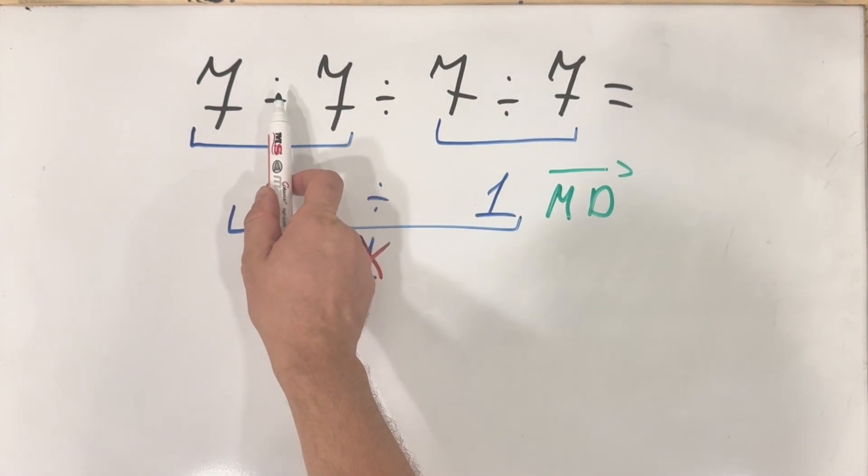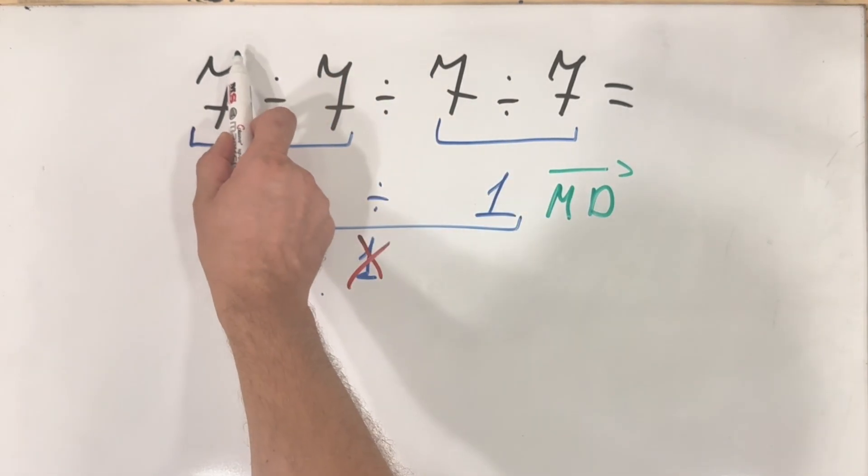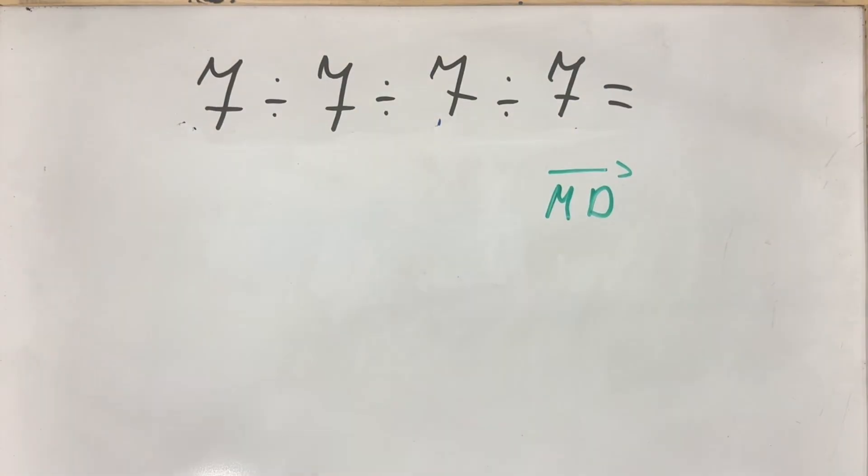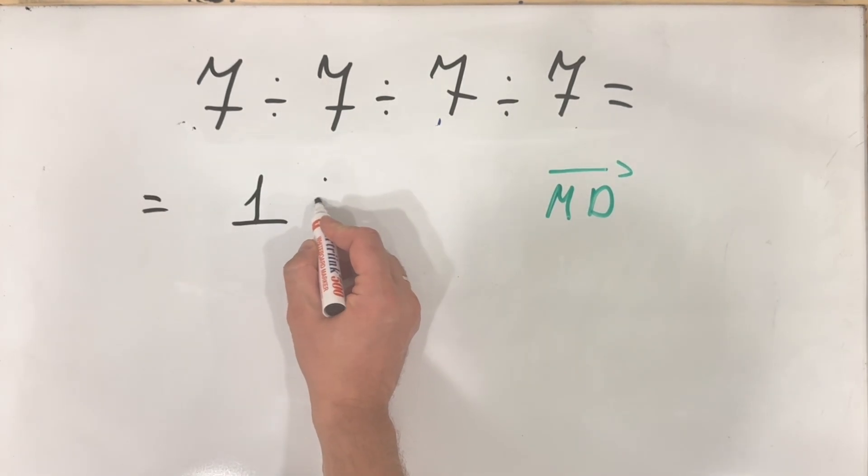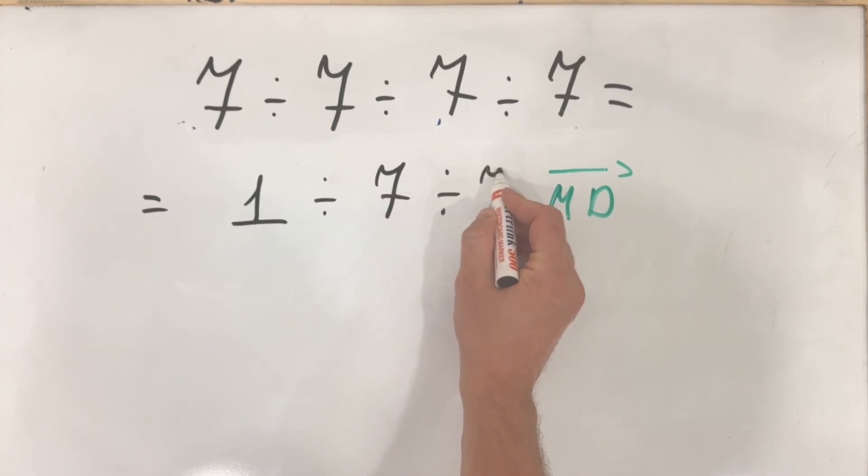So we'll start solving by doing the first division, second and third from left to right. So in our case, we have 7 divided by 7. We have 1, 1 divided by 7, we write it as it is, and divide it by 7.